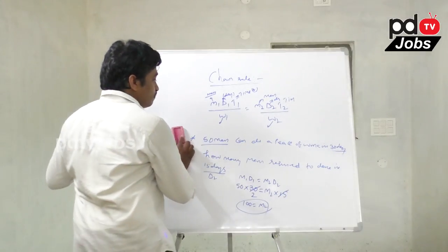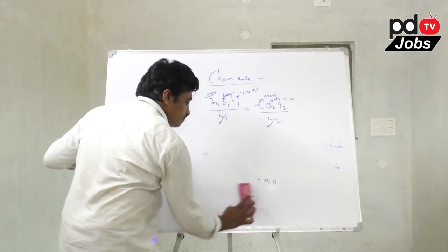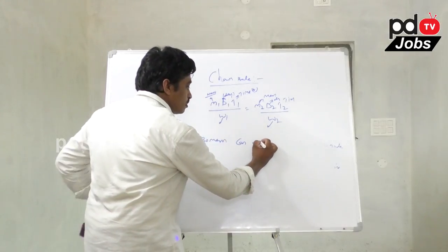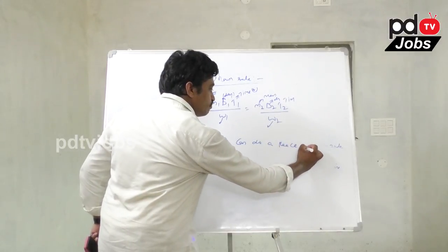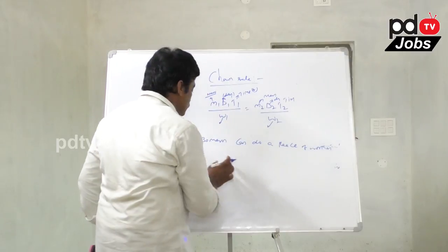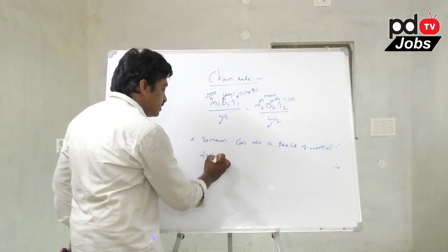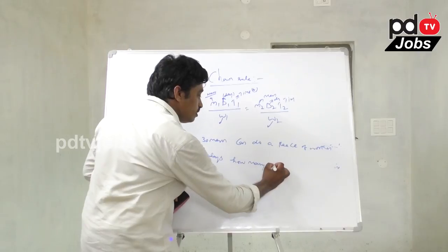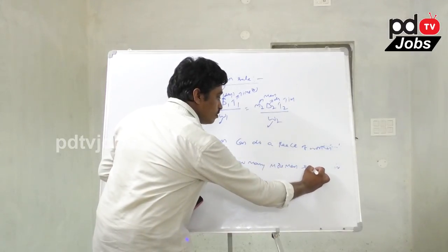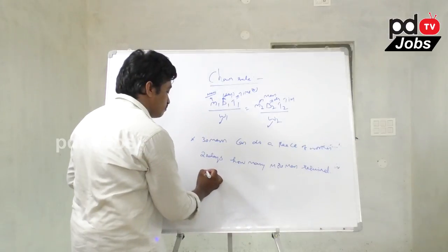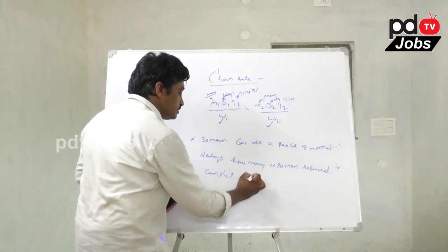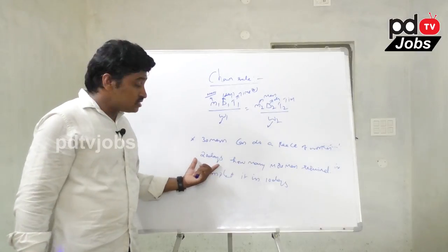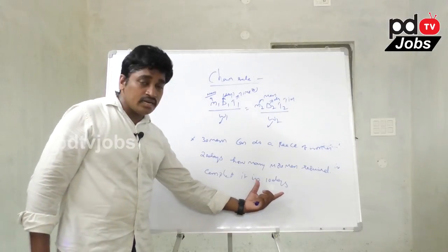Next example: 30 men can do a piece of work in 20 days. How many more men are required to complete the same work in 10 days?